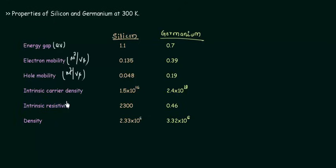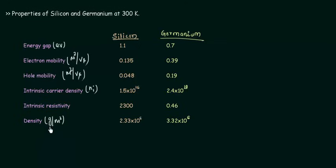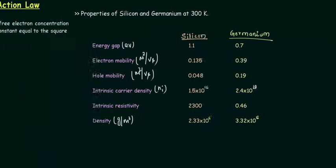The intrinsic carrier density, that is Ni, the intrinsic resistivity, and finally the density — this is the normal density in gram per meter cube. Remember this is in gram per meter cube, not kilogram per meter cube. Write down these properties at some point so that you may use them while solving the numericals.